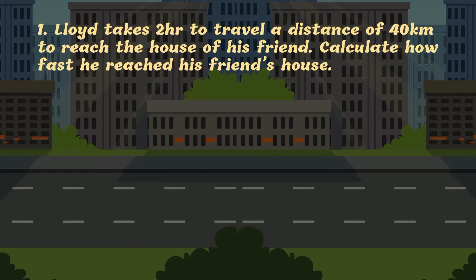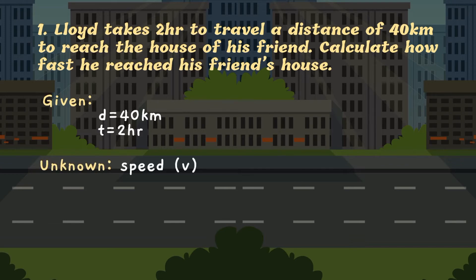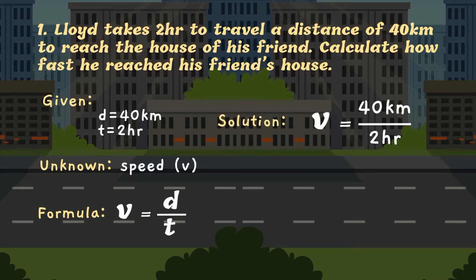Let us have a sample problem. Lloyd takes two hours to travel a distance of 40 kilometers to reach the house of his friend. The question is, how fast did he reach his friend's house? In solving a problem, we must first identify the given. We have distance, which is 40 kilometers, and time, which is 2 hours. The unknown is speed. The formula for speed is distance divided by time. The solution is 40 kilometers divided by 2 hours. The final answer is 20 kilometers per hour.